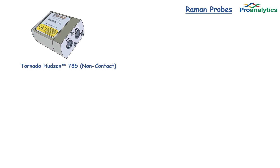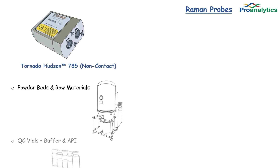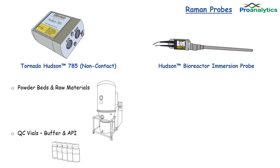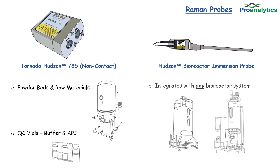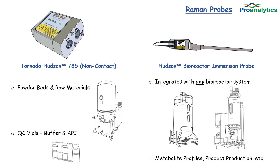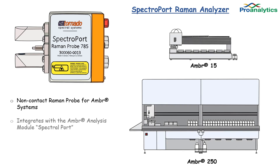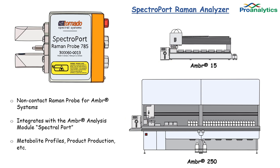Let's look at the non-contact and contact Raman probes. The Tornado Hudson 785 is a non-contact Raman probe for the analysis of powder beds or raw materials such as salts and media components. It can also be used with vials to examine the quality of your product. The Hudson Bioreactor Immersion Probe works with glass, stainless steel, or single-use bioreactors for real-time product or metabolite analysis. The Spectroport Raman probe pairs with the Sartorius AMBER systems, plugging directly into the AMBER analysis module to view metabolite or product profiles.